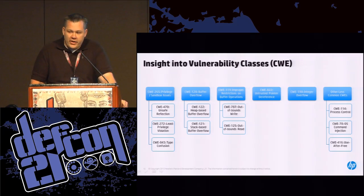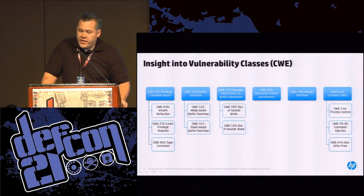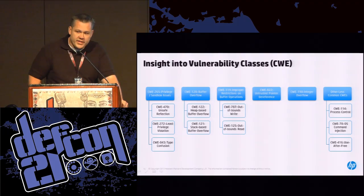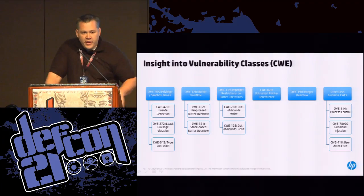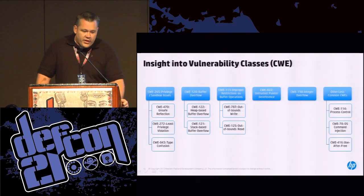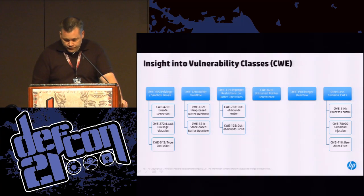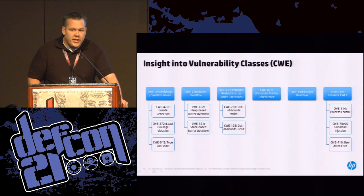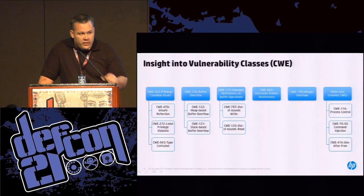We broke them into: unsafe reflection — abuse of the reflection APIs to gain access to restricted components and bypass the sandbox; least privilege violations — abuse of Java's doPrivilege blocks to execute code at a higher privilege; and type confusion — vulnerabilities that confuse Java's type system through the use of deserialized untrusted data or other techniques. We also had classic heap-based and stack-based buffer overflows and various process control issues. The key takeaway is that Java suffers from every major class of bug, making it a really good case study on basically everything.